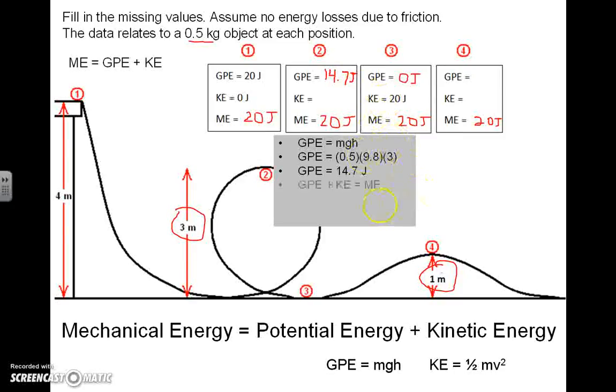We have to remember that GPE plus KE is total mechanical energy. It has to be 20 total joules. That must mean that if 14.7 joules of this energy is present as gravitational potential, the rest of the 20 joules must be kinetic. That would be, in other words, 20 minus 14.7 is 5.3 joules.